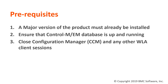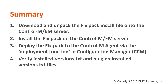The following is a summary of what is involved. Download and unpack the Fixed Pack install file onto the Control M-EM server. Install the Fixed Pack on the Control M-EM server. Deploy the Fixed Pack to the Control M agent via the deployment function in Configuration Manager. Verify the Fixed Pack version by checking the installed versions and plug-in version files.